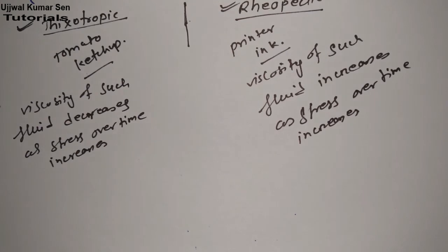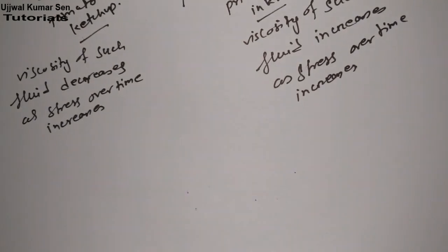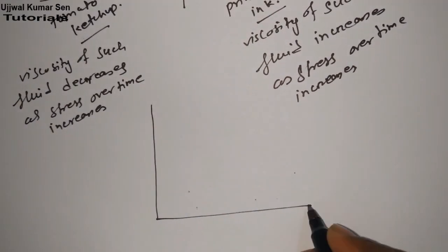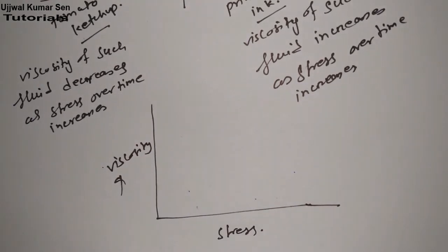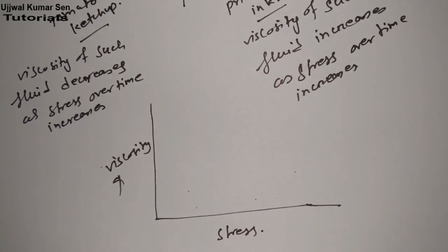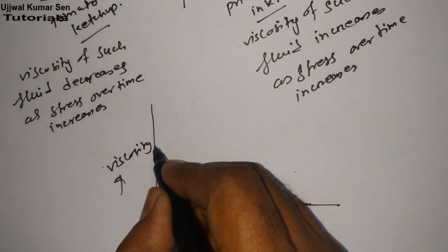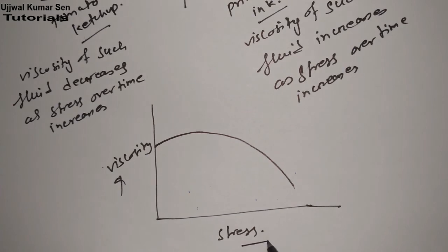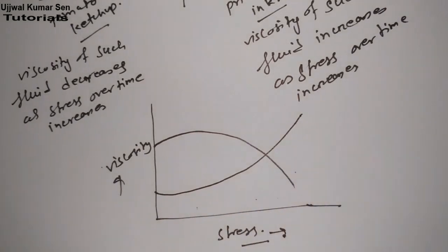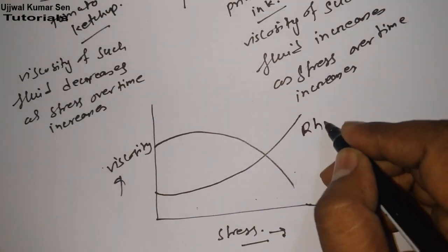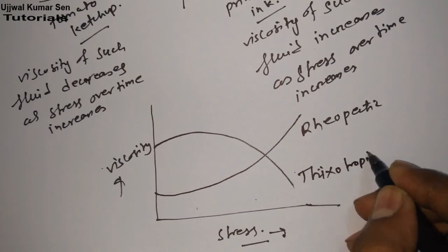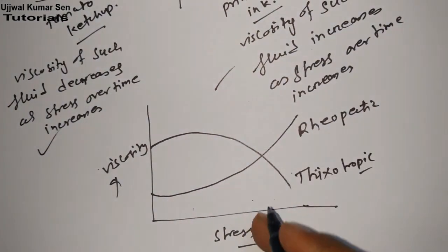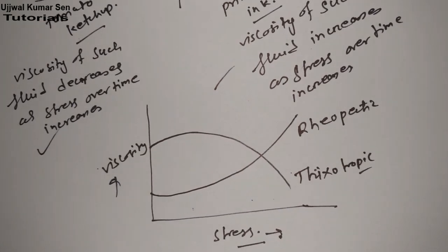Now the most important difference is shown in a diagram. We are drawing a graph — one axis has viscosity and the other axis has stress application over time. Whenever viscosity is decreasing with application of stress over time, that is thixotropic. When viscosity is increasing with application of stress over time, that is rheopathic — which I have already shared in the definitions.